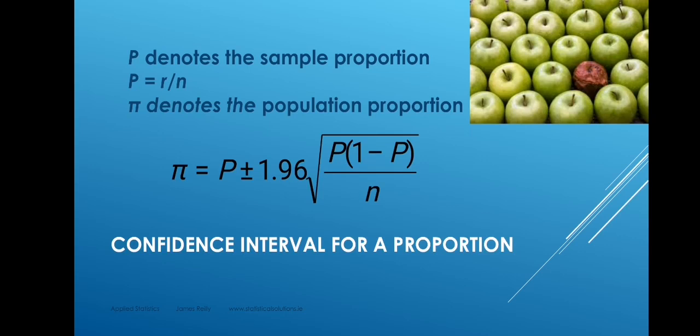So if we're looking at the proportion of defective units of product, N is the number of units in the sample and R is the number that were defective. So R over N gives us P, the sample proportion — the proportion of units in the sample that were defective — and this can be used to estimate the proportion in the population that are defective. We use the Greek letter pi, which is the Greek letter P, to denote the population proportion. In statistics, we use pi to denote the population proportion, and always we use Greek letters to represent population parameters and English letters to represent their sample estimates.